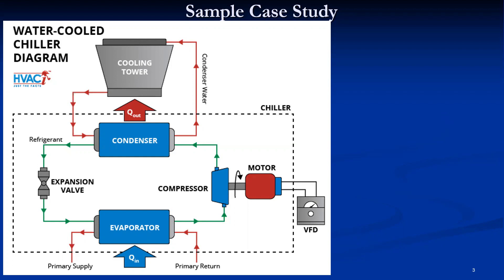The chilled water is circulated through the AHU, which contains the cooling coil, filters, and blowers. Air is made to flow over this chilled water coil, and when it comes in contact with the coil, the air gets cooled and dehumidified. This is an existing plant and we have to measure its performance with available data.